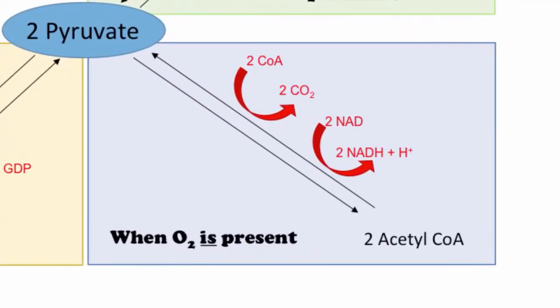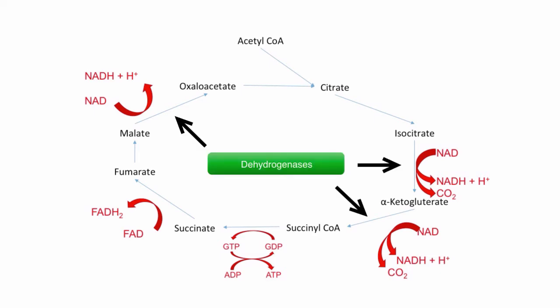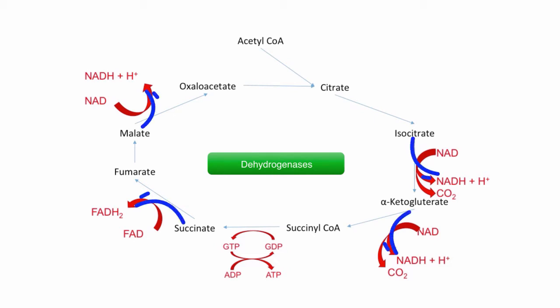With the example of pyruvate being changed into acetyl-CoA, NAD is converted into NADH and H+. Likewise, the dehydrogenase enzymes within the Krebs cycle also involve the specific reactions that create NADH and H+, as well as the reaction that creates FADH2. This is why it is named dehydrogenase, because it dehydrates the molecule to add the hydrogens taken from it to the NAD and FAD molecules.